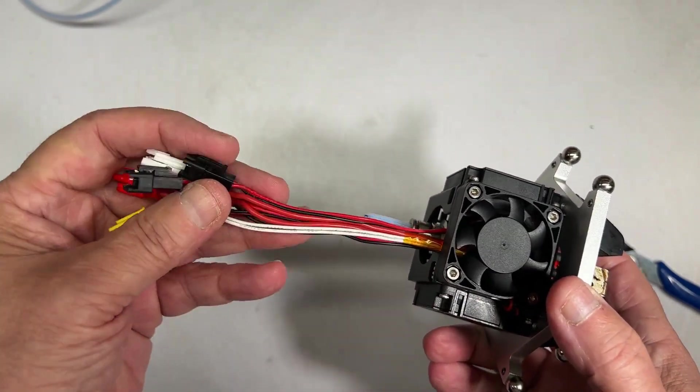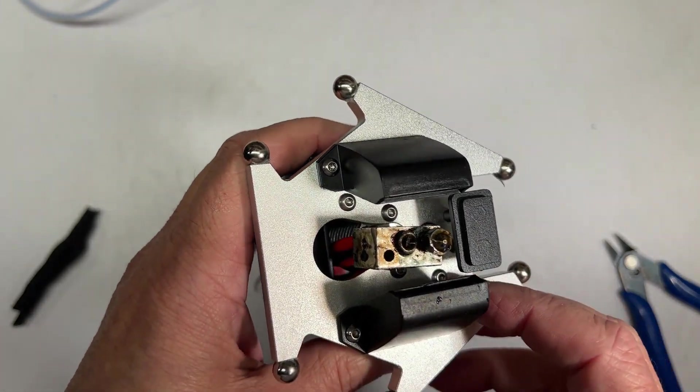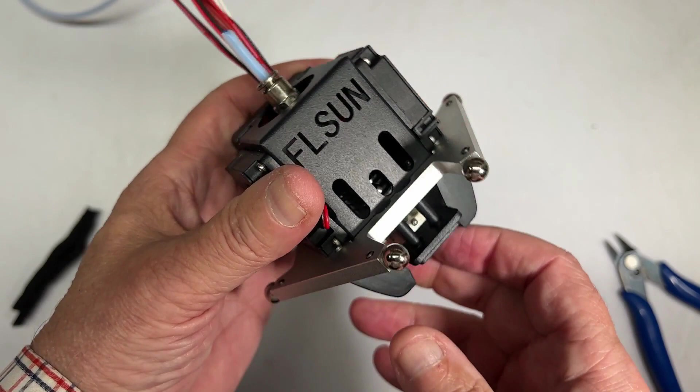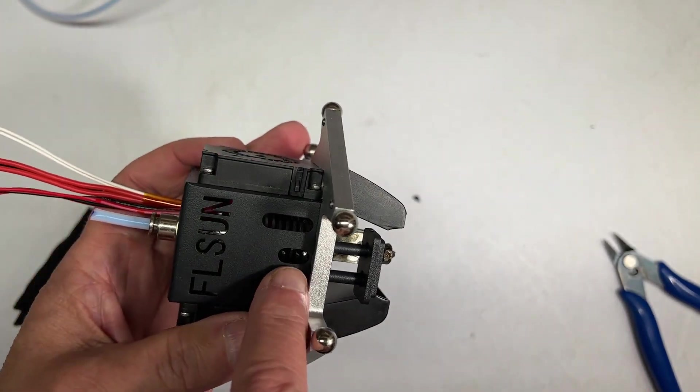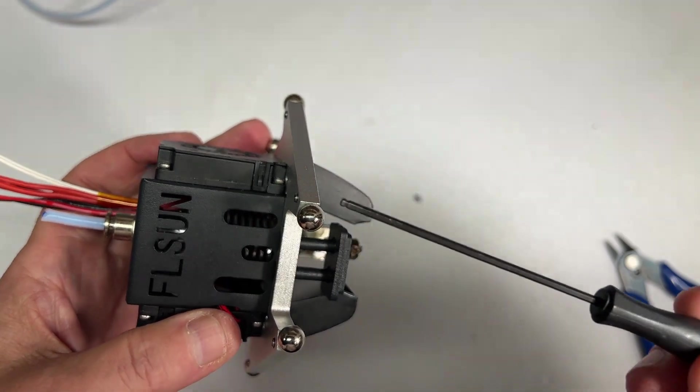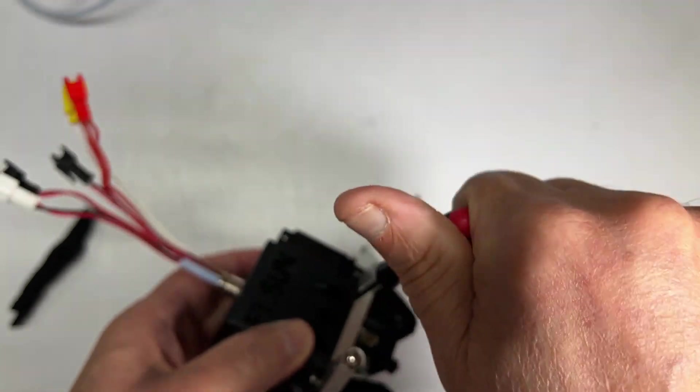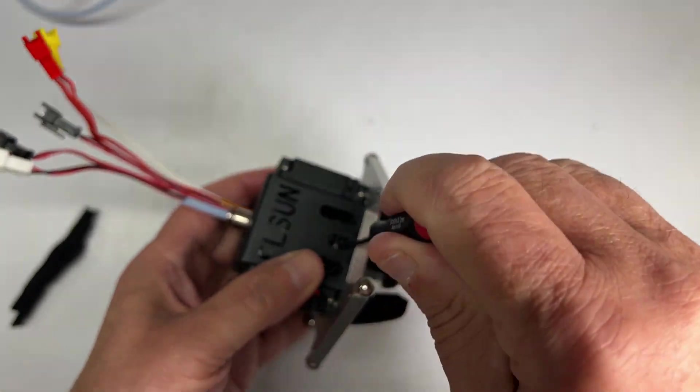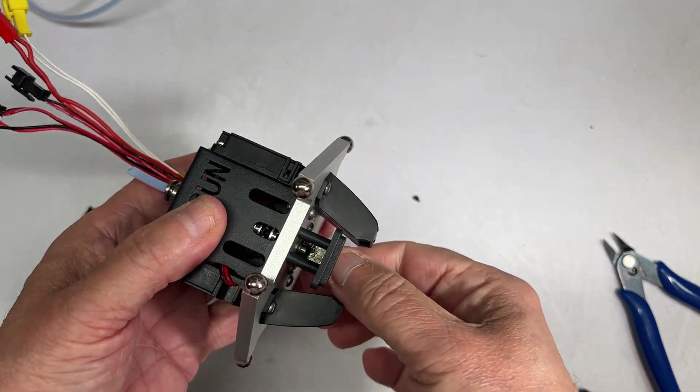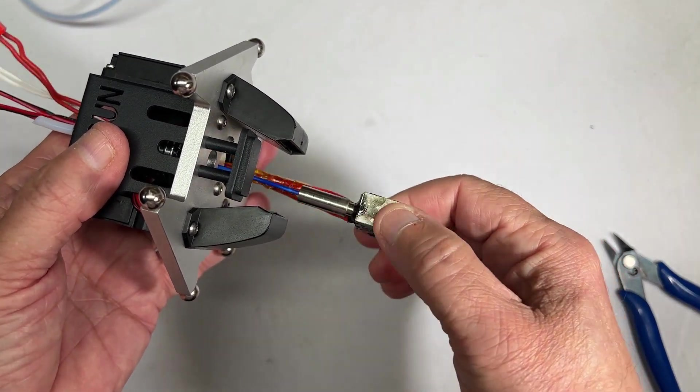So we have the covering off the wires. Now we're just going to simply remove this heat block from the effector. If you notice inside here, there's two set screws. You want to use this allen wrench, get it in there, loosen that up, and there you have it. Comes off nice and easy.